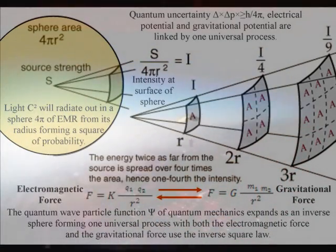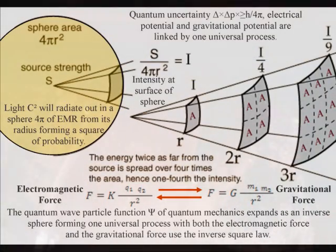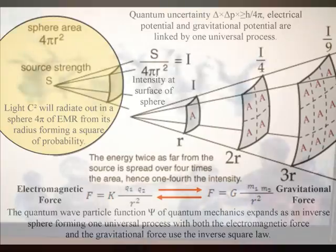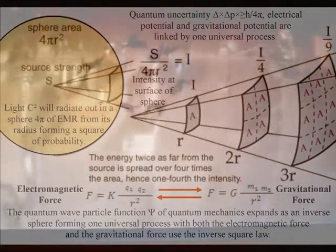I believe this can be seen in the mathematics, with both the gravitational force and the electromagnetic force having the inverse square law. We have the inverse square law because the surface area of the light sphere increases with the square of the radius.